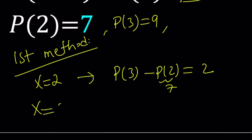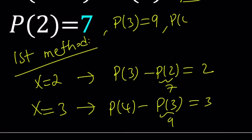And then I'm going to replace X with 3. That's going to give me P of 4 minus P of 3 equals 3. And we know that P of 3 is equal to 9. So that gives us P of 4 equals 12.